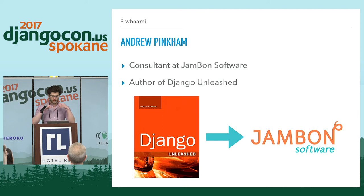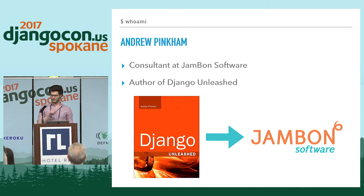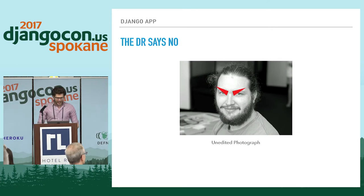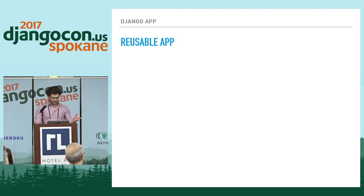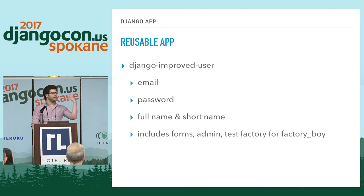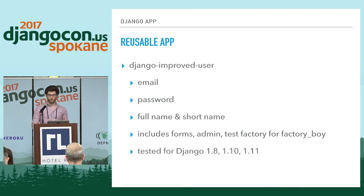If you've read my book Django Unleashed, you know I talk about how to build this. As a consultant at Jambon Software, I was taking that code and just copying and pasting it. Russ pointed out that this was really, really dumb. So we went ahead and created a reusable app called Django Improved User. It does email authentication, gives you a password, a full name and a short name, and you can compose all of these. It includes forms, admin, and if you're using factory boy, a test factory. It's tested in Django 1.8, 1.10, and 1.11.